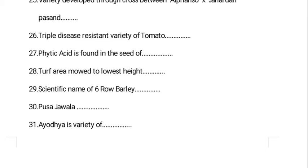The scientific name of six-row barley: there are two types of barley — six-row and two-row. Six-row barley is Hordeum vulgare, which is mostly cultivated in India. Two-row barley is Hordeum distichum.